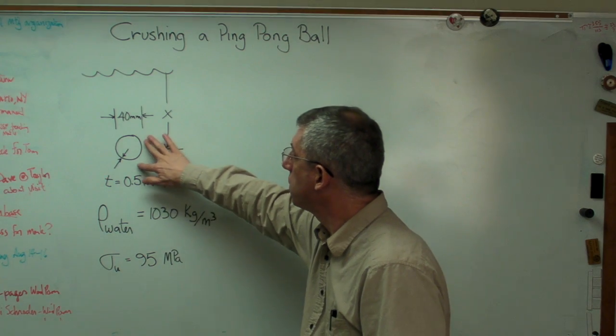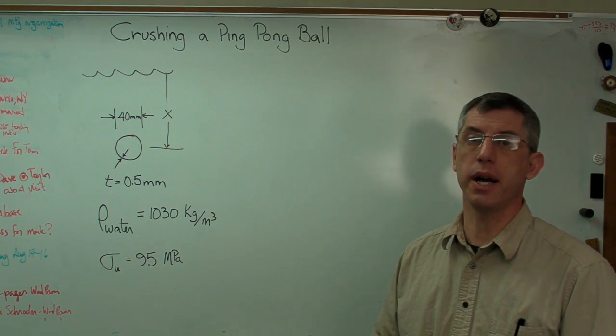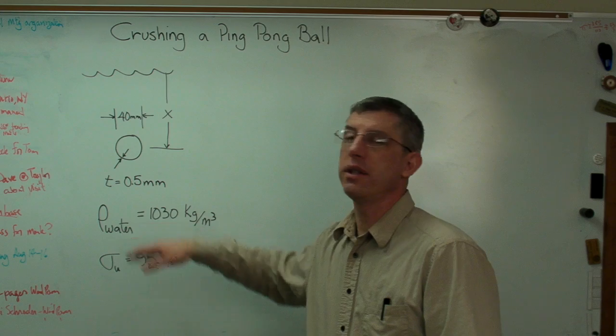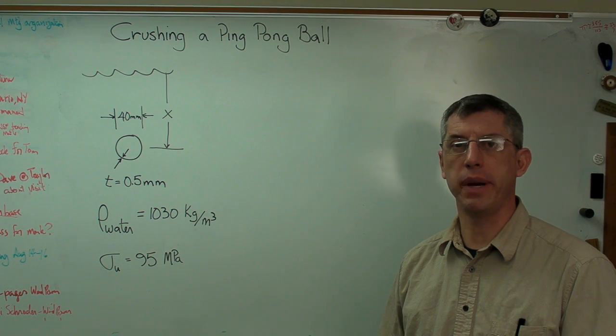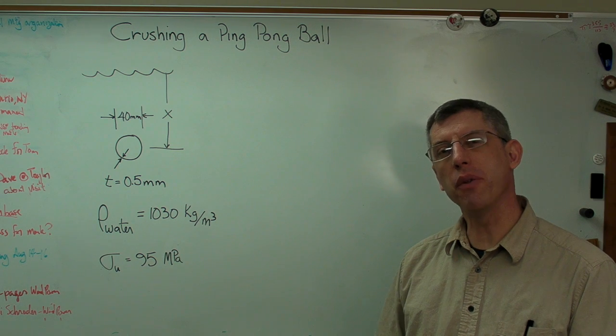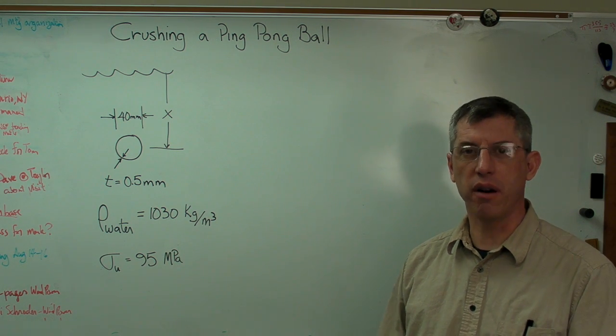For dimensions, a ping pong ball is 40 millimeters in diameter and the wall thickness is about half a millimeter. Now these are round numbers, basically estimates. So I'll get about the right number. If we get a few percent off, that's okay.